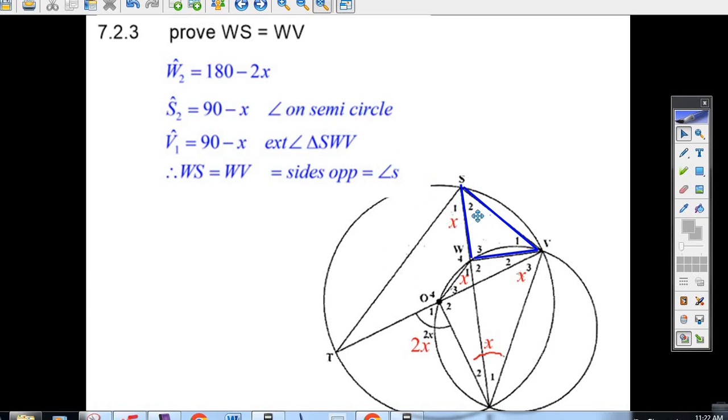Because this whole thing is 90 degrees, S2 is 90 minus x. Now, we know this W2 is 180 minus 2x. Now, we know this angle here is 90 minus x. Well, these two opposite angles have to add up to the exterior angle.